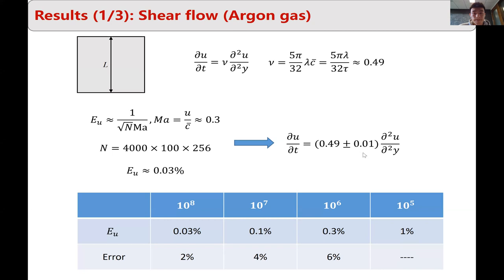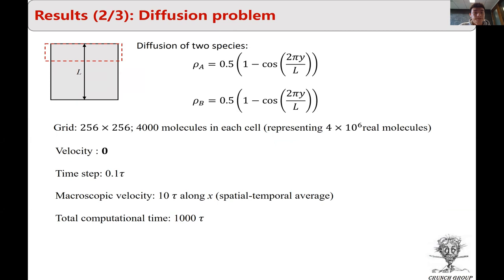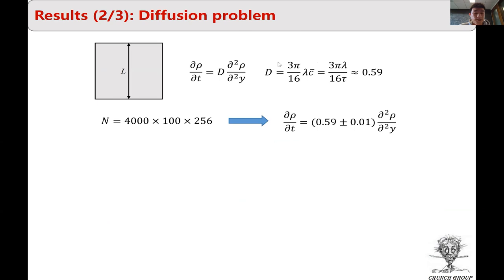The second problem is a diffusion problem with two species in a square domain. The setup is the same as the previous case, but with velocity equal to zero — making it a pure diffusion problem. The reference macroscopic governing equation involves diffusion coefficient D.